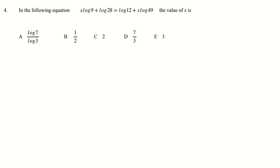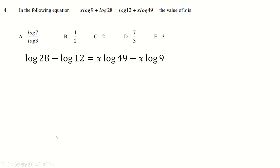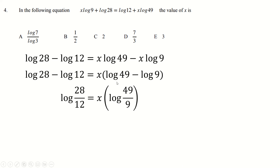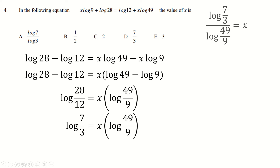On this one we're going to put the x's on the same side and the non-x's on the other. We can factorize out the x and then follow log laws to say that we can divide the inputs. So of course therefore x is this log divided by this log. Cancel down some numbers first and you eventually end up with x.